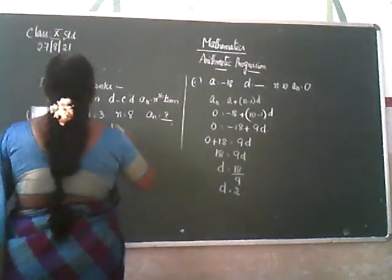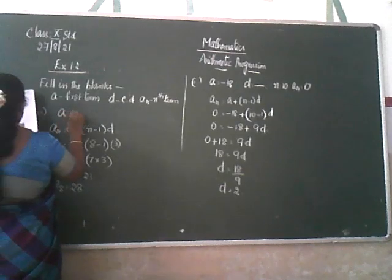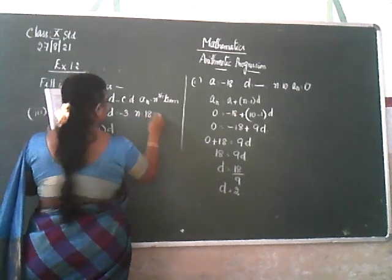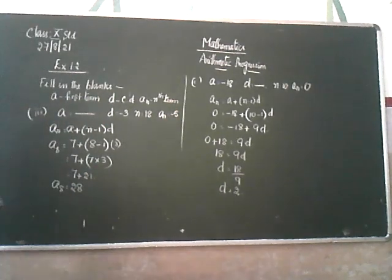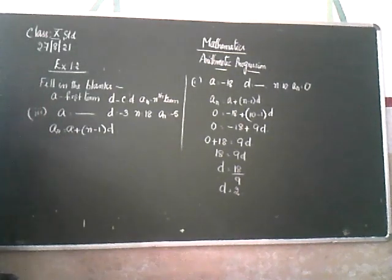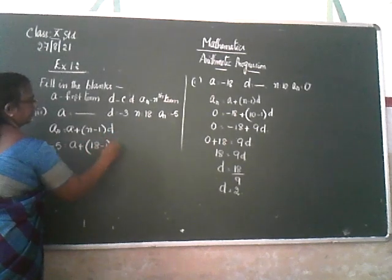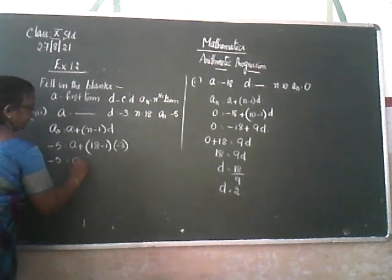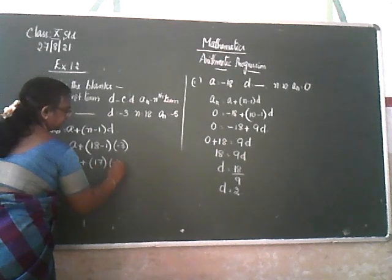Now the third sum. A you should find out, D is minus 3, N is 18, AN is minus 5. Substitute now: AN is equal to A plus N minus 1 into D. What is AN? Minus 5. A plus N minus 1, D is minus 3. So minus 5 equals A plus 17 into minus 3.